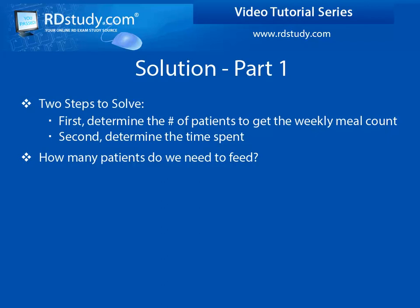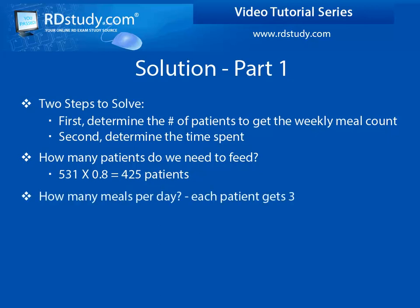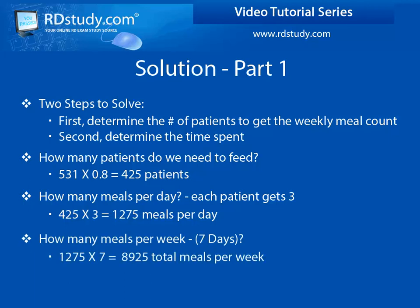First, what will an 80% occupancy rate be, and how many weekly meals does that mean? Multiply 531 times 0.8 to get a rounded 425 patients. Each patient receives 3 meals per day, so multiply by 3, and you need to make 1,275 meals per day. From there, determine the weekly count — multiply again by 7 to get 8,925 total meals per week.